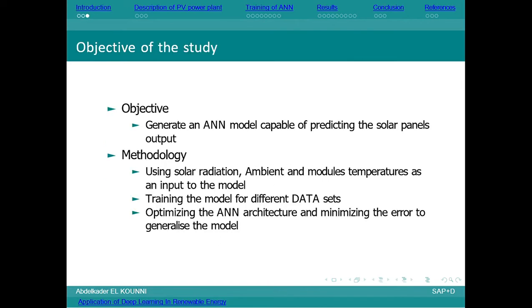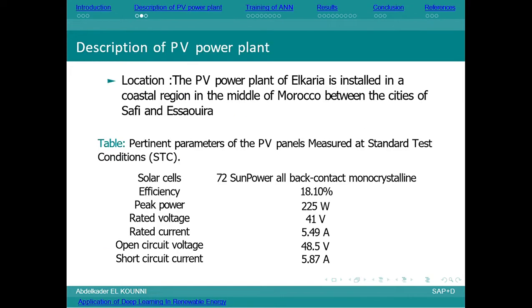Our goal is to generate an artificial neural network capable of predicting the PV power plant output, including all these parameters implicitly, such as cable losses, conversion losses, and the PV power plant configuration. In our case study, we were working on a power plant located in Al-Qarria, Morocco, characterized by high solar radiations. These are the characteristics of the modules we use in this power plant.